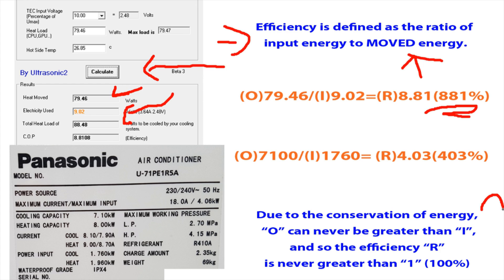But we also made this statement: due to the conservation of energy, output can never be greater than the input, and so the efficiency can never be greater than 100% or 1. I've just said this statement is true. However, we have 881% efficiency from the TEC.